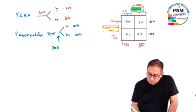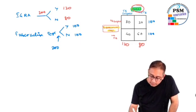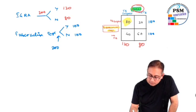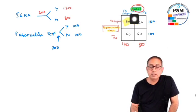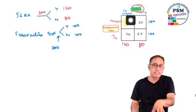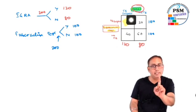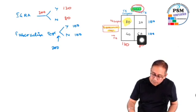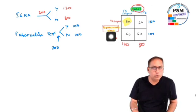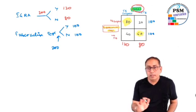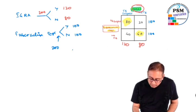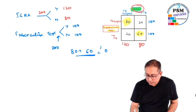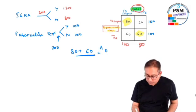Now how to calculate the observed agreement? I'll shade the area which was observed. IGRA says yes TB, tuberculin test also says yes TB - this box, both said yes - 80 people. And 60 people had both tests saying no. So 80 plus 60, this is the observed agreement, which equals 140.